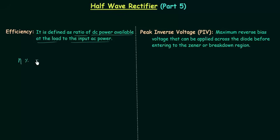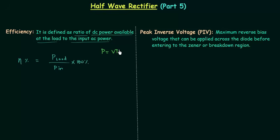Eta percentage is equal to P load, the power available at the load, divided by P in, the input AC power, multiplied by 100. We already know power is equal to VI, and since V is equal to IR, power is equal to I squared R.